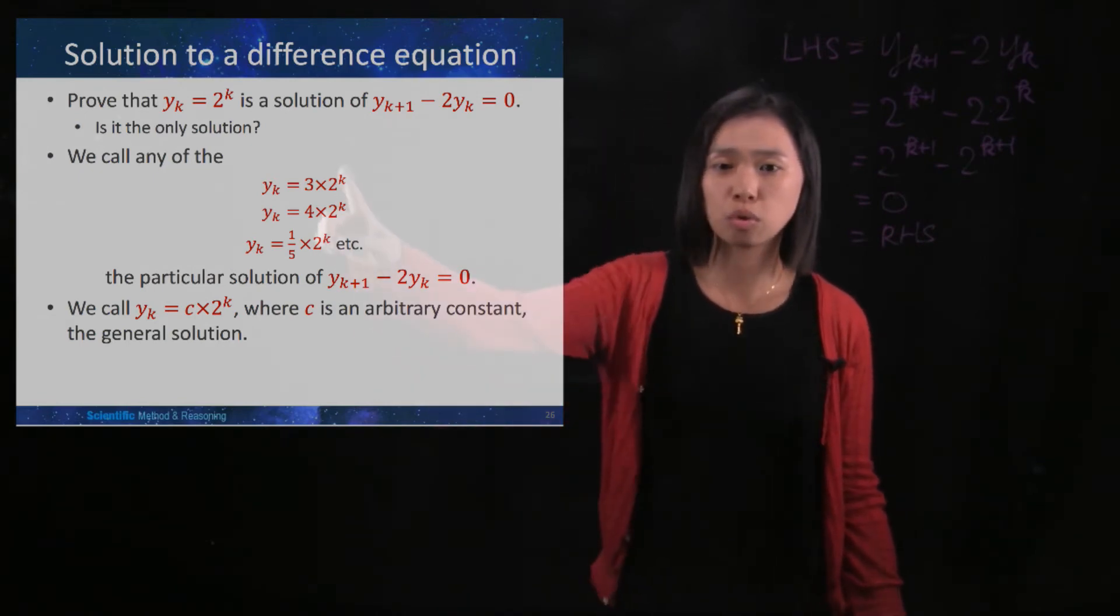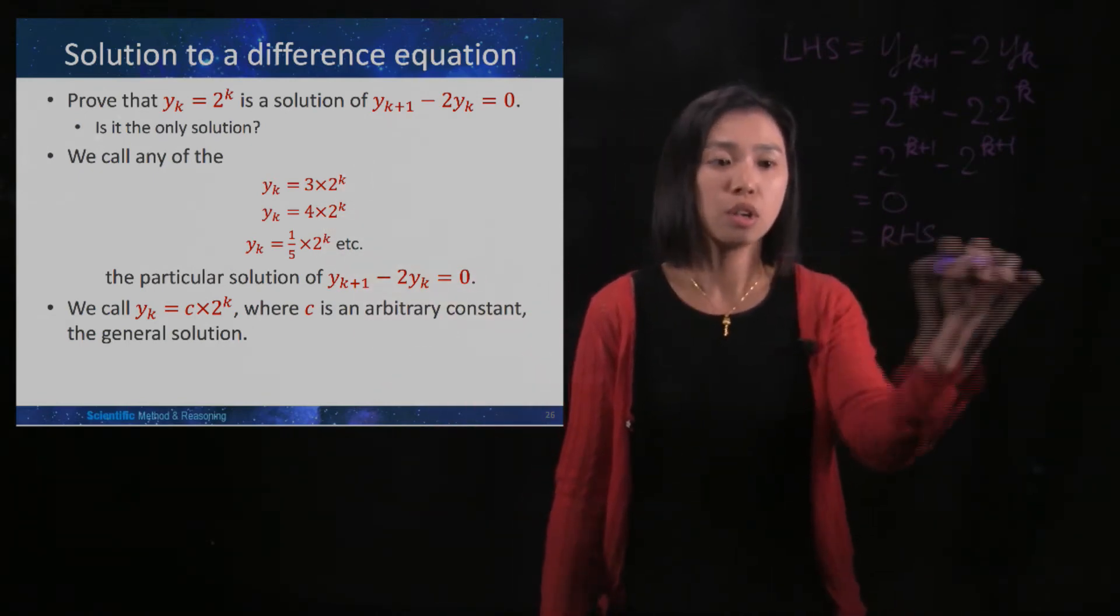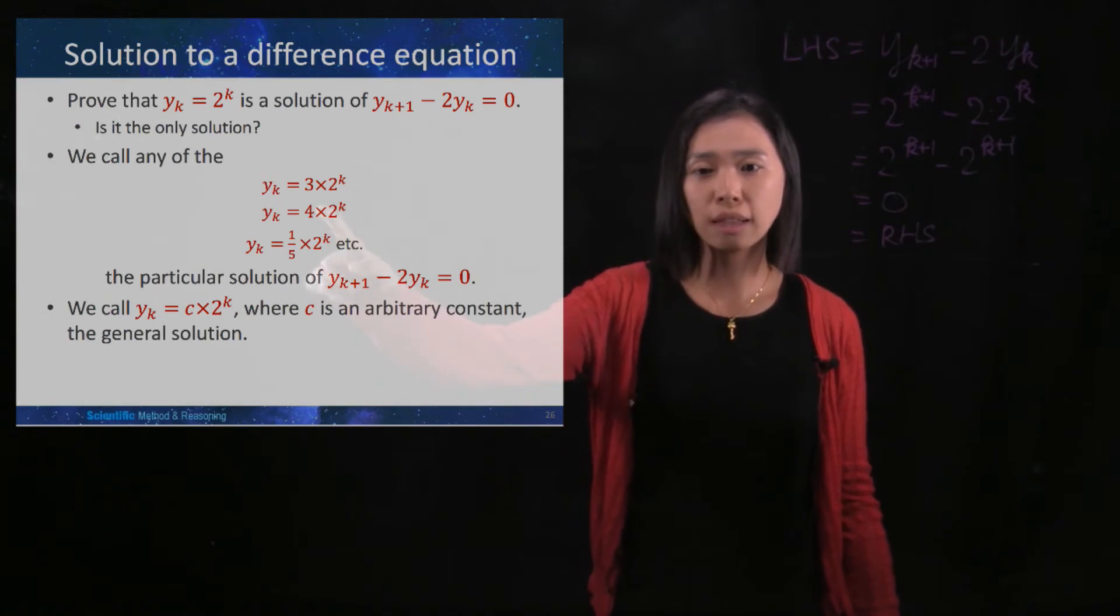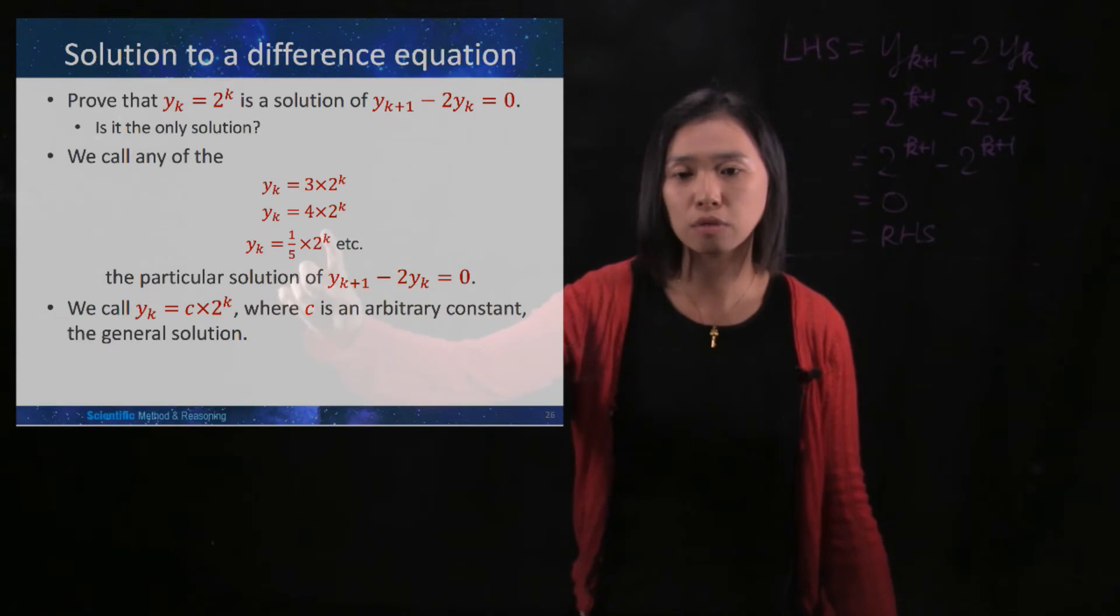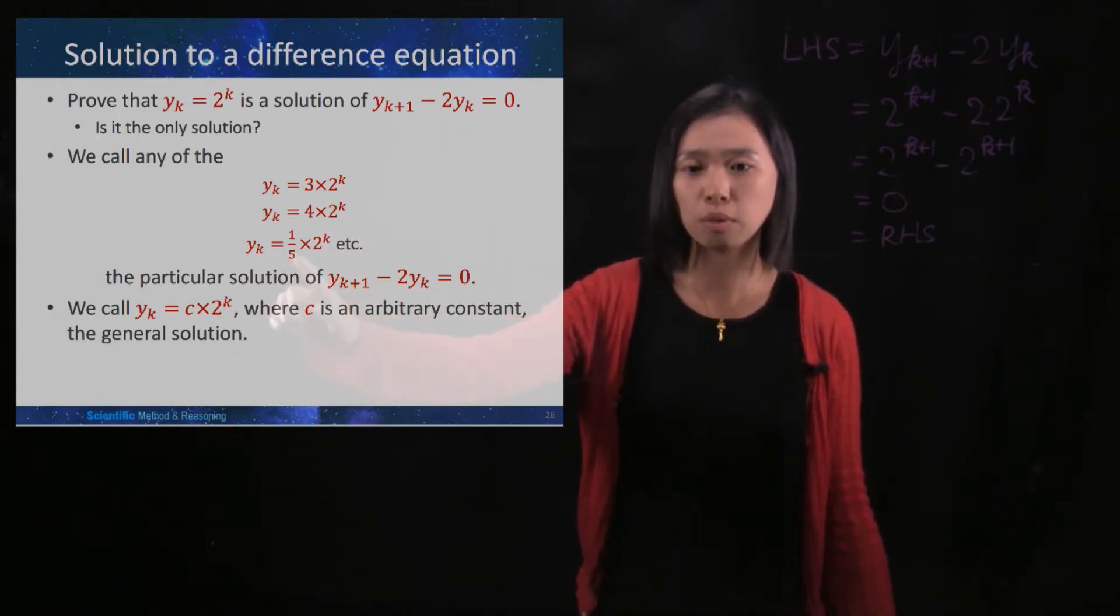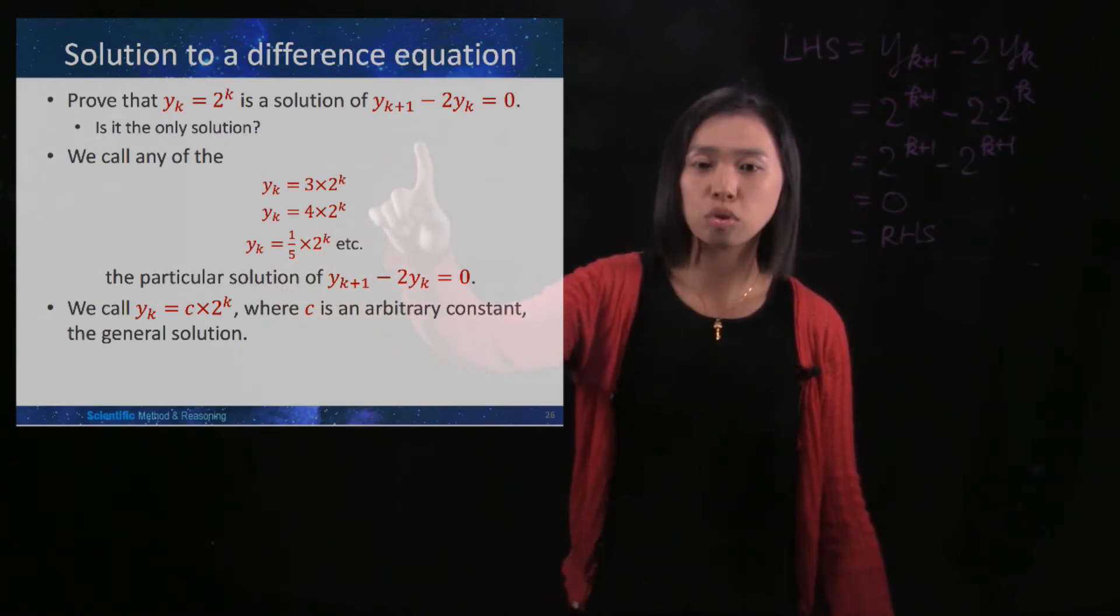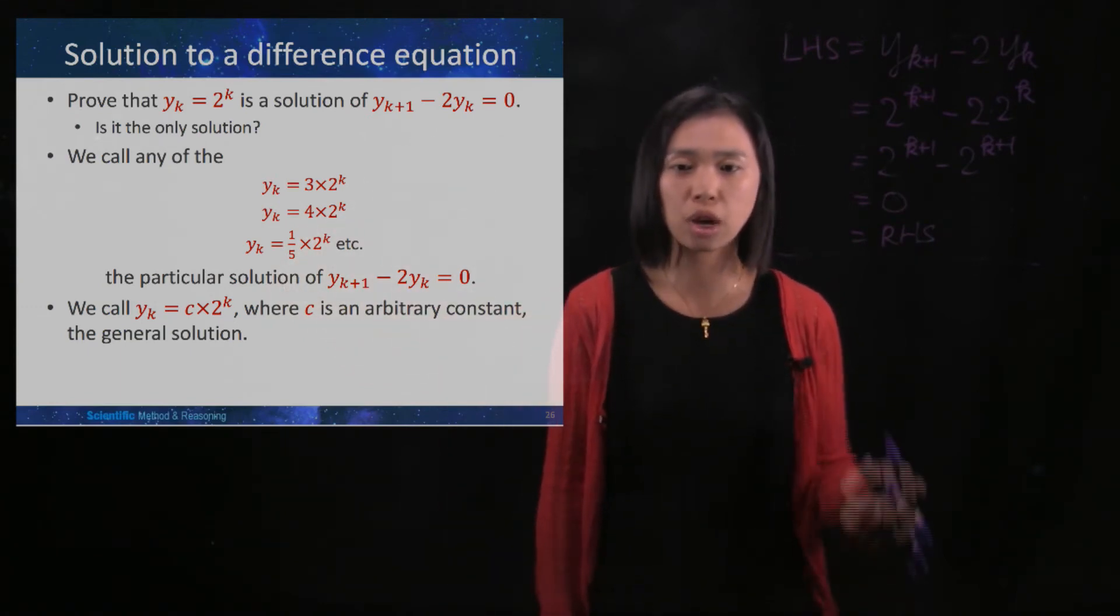So is it the only solution? The answer is no, it's not. So you can also check that yk is 3 times 2 to the power of k, yk is 4 times 2 to the power of k, yk is 1 fifth times 2 to the power of k. All of these are also the solutions to this difference equation.